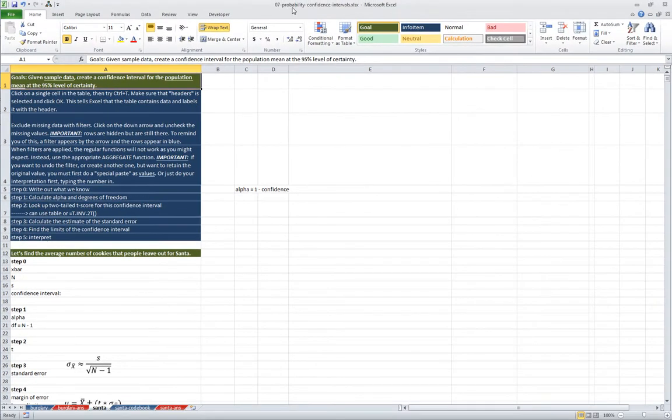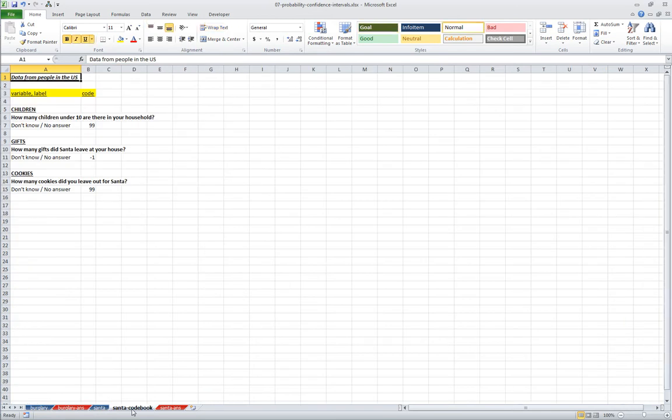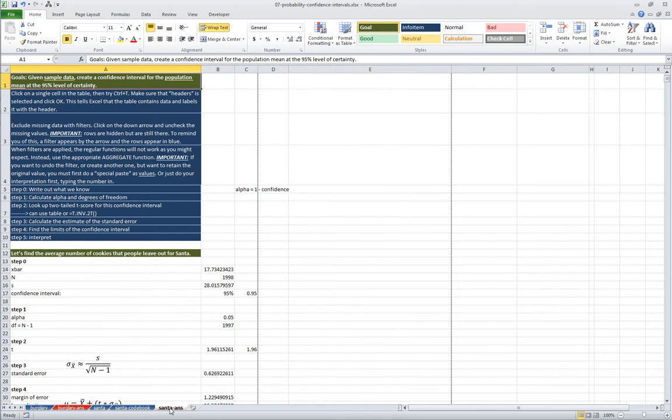We're in the workbook 07 probability confidence intervals and we're in the worksheet Santa. You can also see we have our code book which tells you what the variables mean and each of the values for those variables. We have the answers so you can see where we're going to check in.